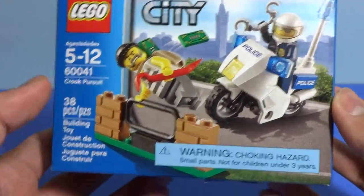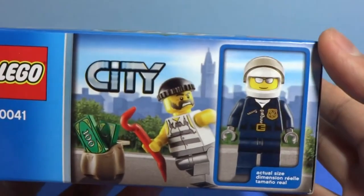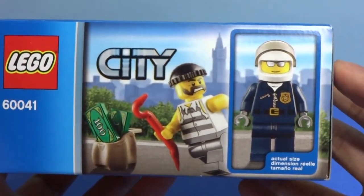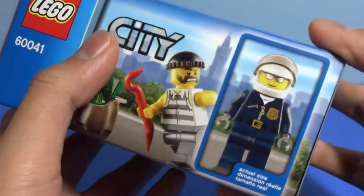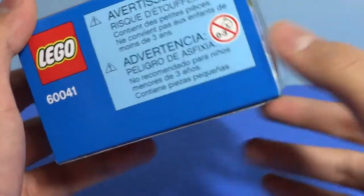There are 38 pieces, building toy, warning. Here's the actual size of one of the minifigures and there's the crook. Wondering why the guy's posing for something in front of a box.